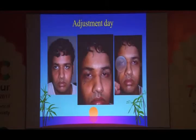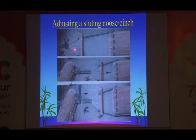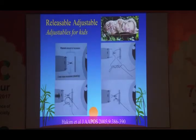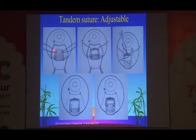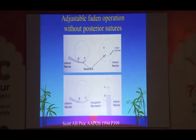If you need to recess further you can. In the sliding noose technique, a reverse throw suture can be slid on the vicryl sutures. In children, if you want to do an adjustable procedure, there is a technique described by Hakim et al. — a releasable suture — or a tandem technique where one suture can be trimmed. The tandem suture has two sutures, one with extra recession, and you can trim one to give two fixed options. Can Faden be made adjustable? Yes, even Faden can be made adjustable — very important specifically for correcting near-distance disparities.